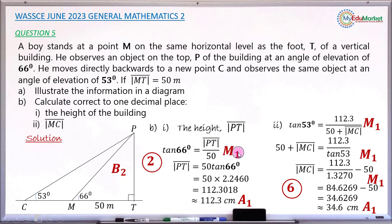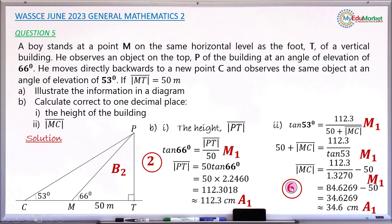For question B, the mark distribution is as follows: one method mark for taking the tangent ratio of 66 degrees correctly; one accuracy mark for PT rounded to one decimal place; one method mark for taking the tangent ratio of 53 degrees correctly; one method mark for setting up the equation; one method mark for simplifying to find MC; and one accuracy mark for MC = 34.6 meters. Question B is worth 6 marks in total.